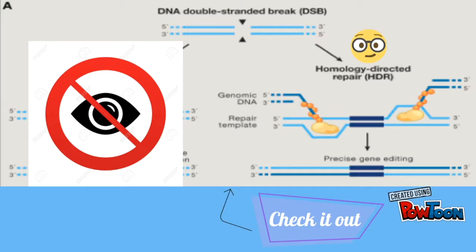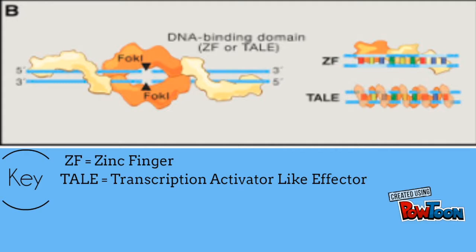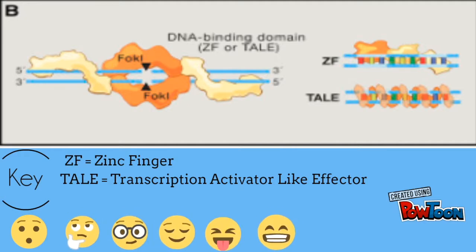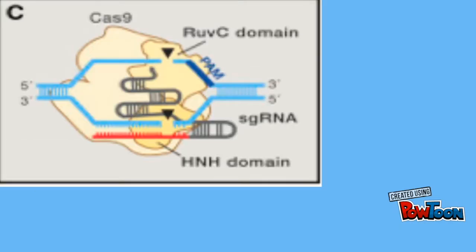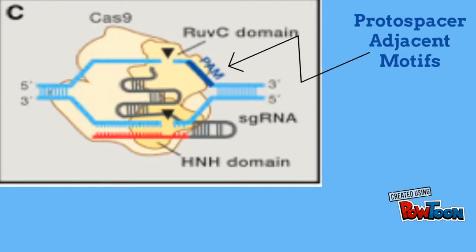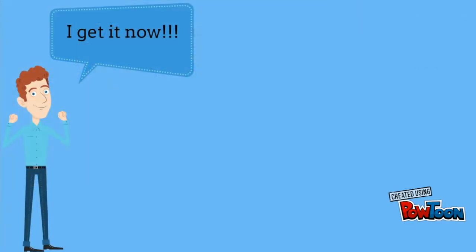Bypassing the sister chromatids eases the introduction of genetic modifications. In part B, zinc finger proteins and transcription activator-like effectors are naturally occurring DNA-binding domains that can target specific sequences. Zinc finger domains can recognize three base pairs of DNA, while transcription activator-like effectors can identify one. These binding proteins can be fused to the focal endonuclease to create site-specific nucleases. Part C shows that the Cas9 nuclease from CRISPR focuses on specific DNA sequences by the guide sequence on its guide RNA, which directly base-pairs with DNA. Binding of protospacer adjacent motifs directs Cas9-mediated double-strand breaks.